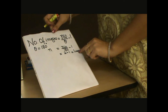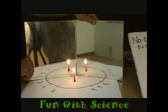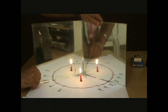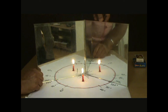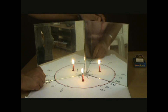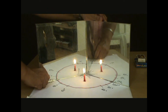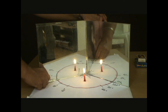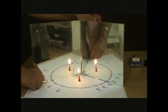Now I will change the angle to 120 degrees. And the number of images formed is 2. According to the formula also, it is again 2 images.